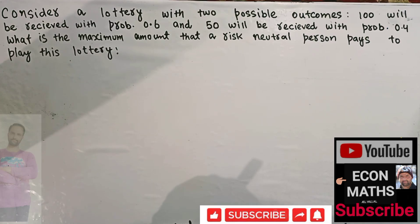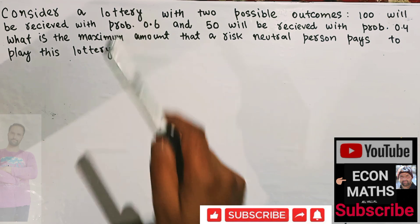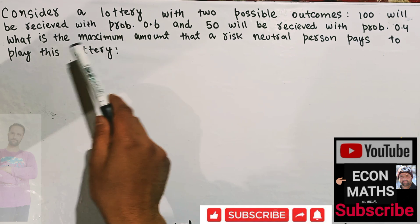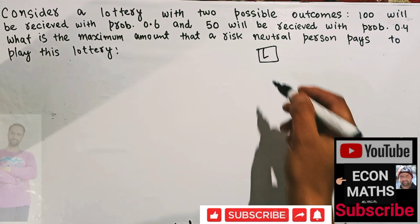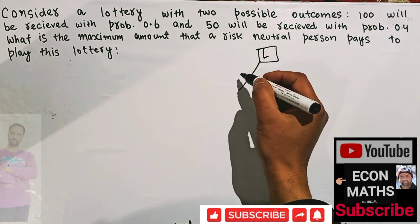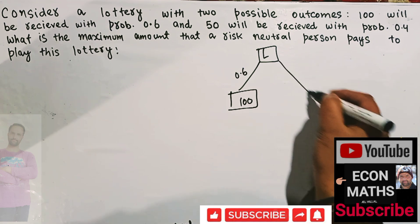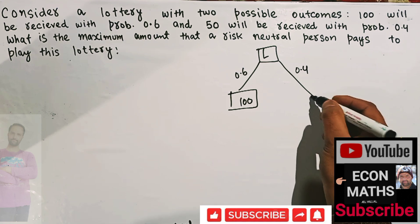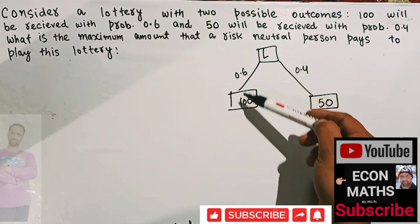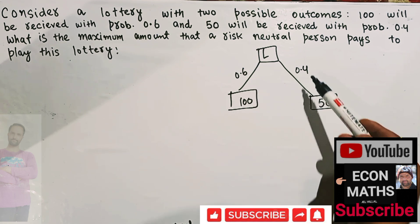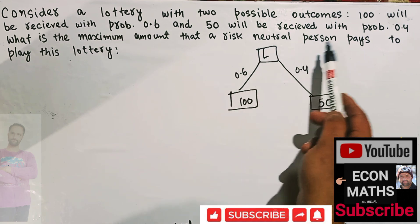Another question from the GATE Economics 2021 paper: consider a lottery with two possible outcomes — 100 rupees will be received with probability 0.6 and 50 rupees will be received with probability 0.4. So there is a 60 percent chance the person will get 100 rupees and a 40 percent chance he will receive 50 rupees. What is the maximum amount that a risk-neutral person pays to play this lottery?